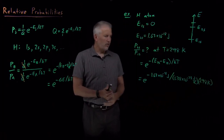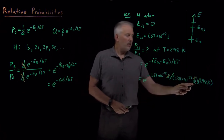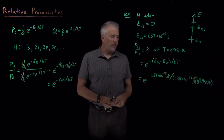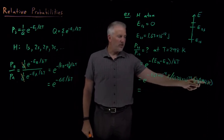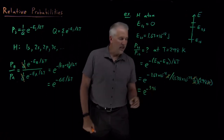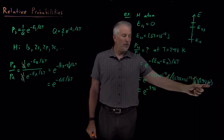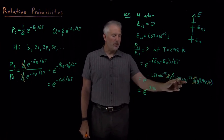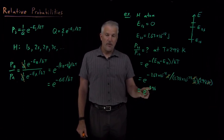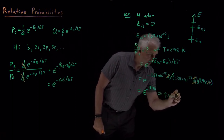Let's check units before going to the calculator. In the exponent we have joules in the numerator and joules per Kelvin times Kelvin in the denominator, so the exponent is unitless. Plugging in the numbers, 10 to the minus 18 is quite a bit larger than 10 to the minus 23, even after multiplying by a few hundred Kelvin, so the ratio in the exponent is about 396. That gives us e to the minus 396, an almost ridiculously small number.